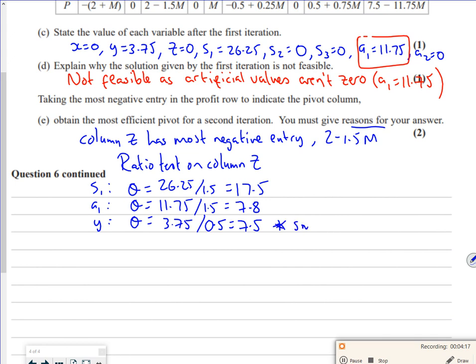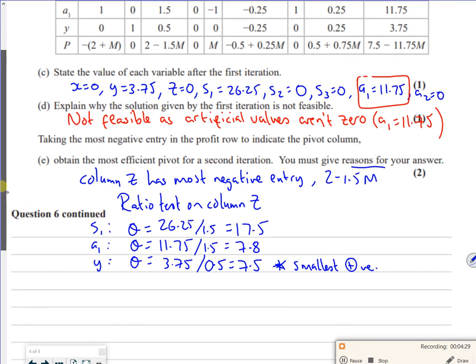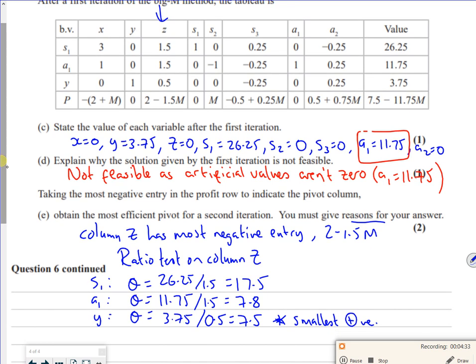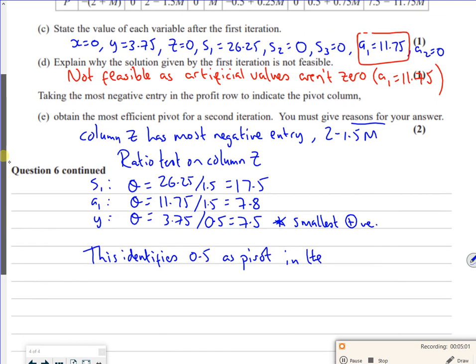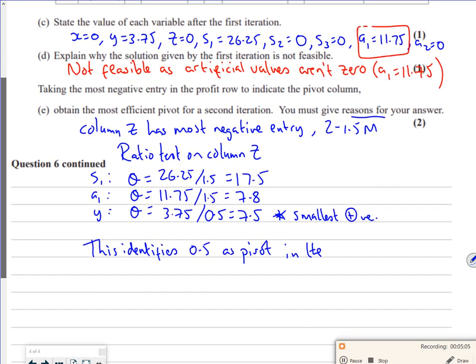This one here is my smallest positive. That's the one that I can leap to, that point I can leap to the easiest. So from here then, this would identify this 0.5 as my pivot. So this identifies 0.5 as a pivot. From there, it was the Z column and the Y row.